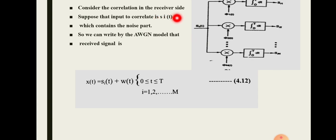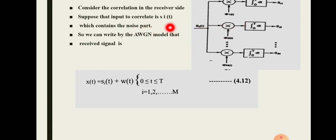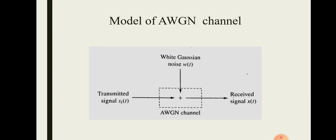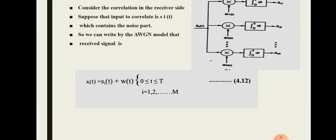Consider the correlator at the receiver side. The input to the correlator is the received signal. When noise is present, it is multiplied by the corresponding orthonormal basis function and applied to the correlator. Because the received signal now contains noise, we use the notation x(t) rather than si(t) — x(t) includes the presence of noise.